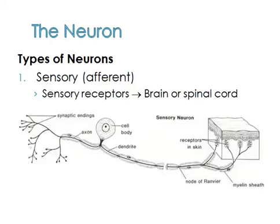We do have different types of neurons. The structure we saw was just general, but the actual structure for specific types of neurons can vary. The first type we'll be looking at is something called a sensory or afferent neuron.